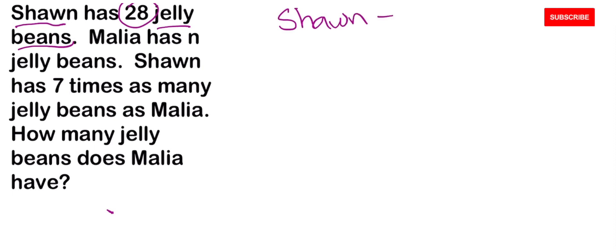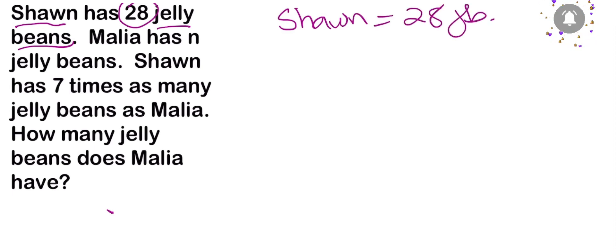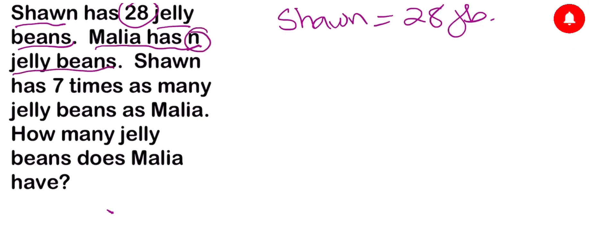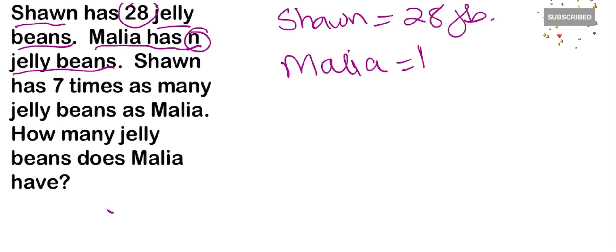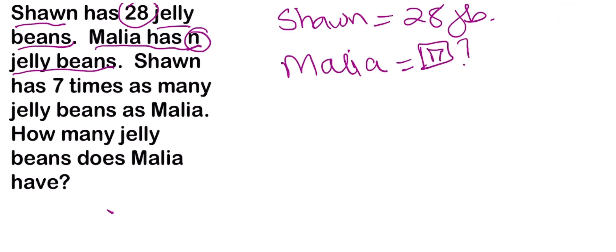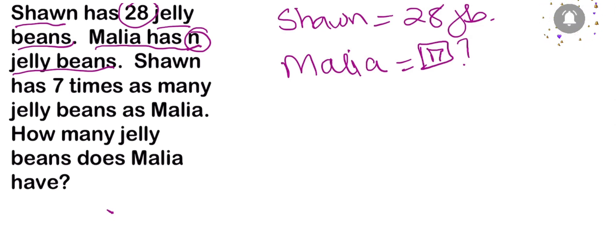Sean already sold 28 jelly beans. Malia, on the other hand, has n number of jelly beans — so whenever I see Malia's name, I know I need to figure out what she sold. Here's what we know: Sean actually sold seven times as many jelly beans as Malia.